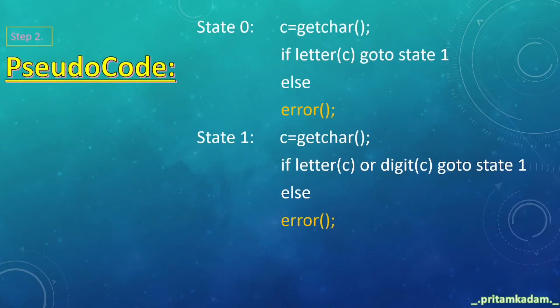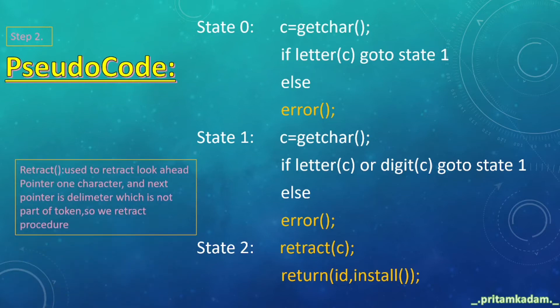Then in final state we have to write state 2: retract(c), return id, install. This is by default we have to write this in the final state. What is retract? Retract is used to retract look-ahead pointer one character, and next pointer is limiter which is not part of token, so we retract procedure.